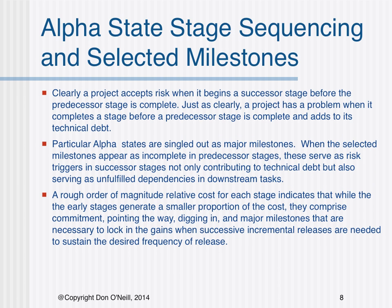Clearly, a project accepts risk when it begins a successor stage before the predecessor stage is complete. Just as clearly, a project has a problem when it completes a stage before a predecessor stage is complete and adds to its technical debt. Particular alpha states are singled out as major milestones. When selected milestones appear as incomplete in predecessor stages, these serve as risk triggers in successor stages, not only contributing to technical debt but also serving as unfulfilled dependencies in downstream tasks. A rough order of magnitude relative cost for each stage indicates that while the early stages generate a smaller proportion of the cost, they comprise commitment, pointing the way, digging in, and major milestones necessary to lock in gains when successive incremental releases are needed to sustain desired frequency of release.